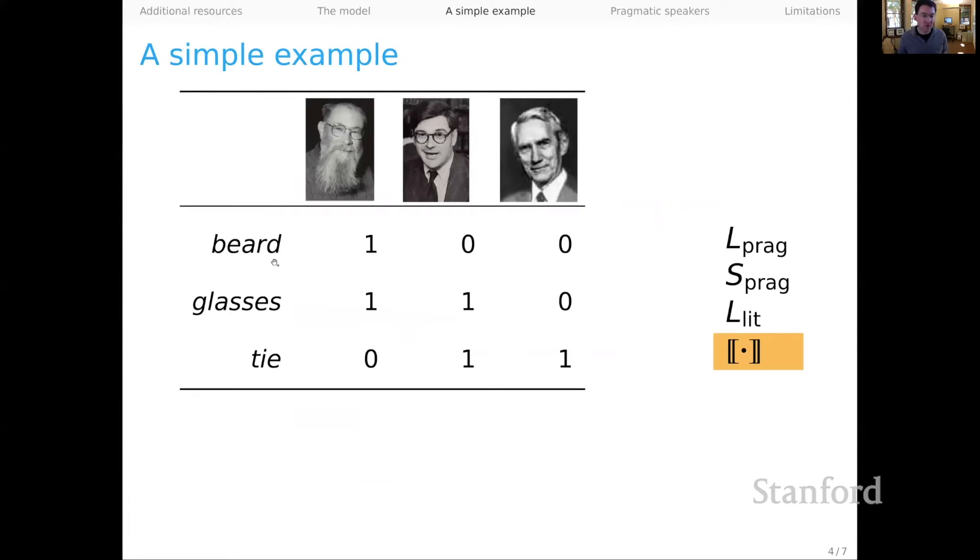So along the rows in this, I have the messages. We're imagining a very simple language in which there are just three messages. You can think of them as shorthand for like, the person I'm referring to has a beard, the person I'm referring to has glasses, and so forth. And we have just three reference. And I'll tell you that this is David Lewis, one of the originators of signaling systems, which is an important precursor to RSA. This is the philosopher and linguist Paul Grice, who did foundational work in pragmatics. And this is Claude Shannon, who of course is the developer of information theory.